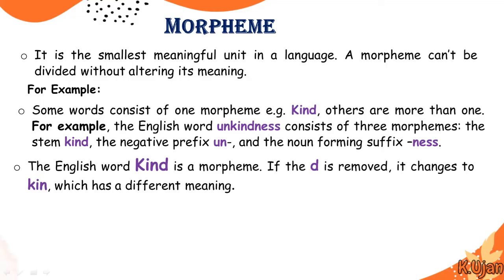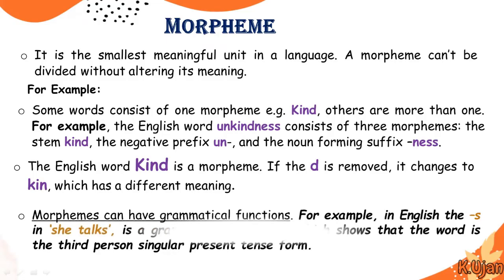We have four examples here. 'Kind' is a morpheme and a word because it is the smallest meaningful unit. 'Kin' is another morpheme and a word as well. But 'unkindness' is not a morpheme — it consists of three morphemes. Morphemes can also have grammatical functions. For example, in English, the '-s' in 'she talks' is a grammatical morpheme showing third person singular present tense.